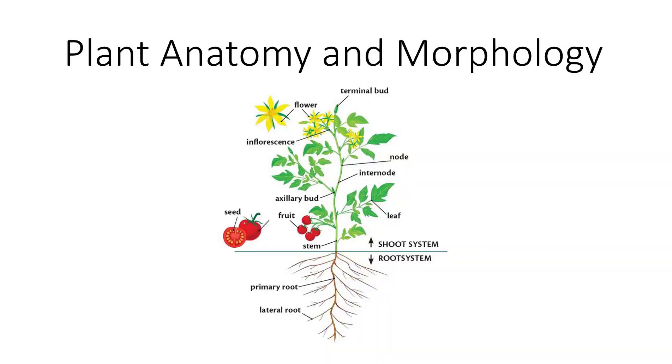Plant morphology is the description of the physical form and external structure of plants, while plant anatomy is the study of the internal structure of plants.